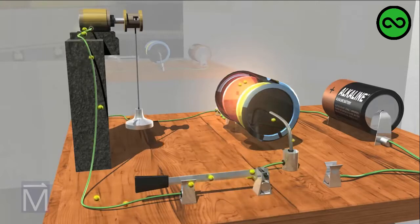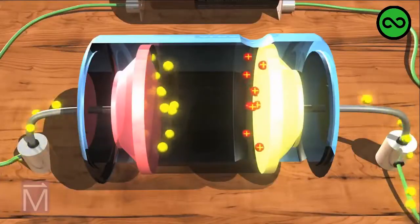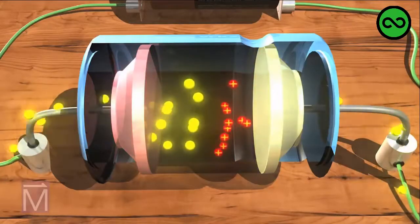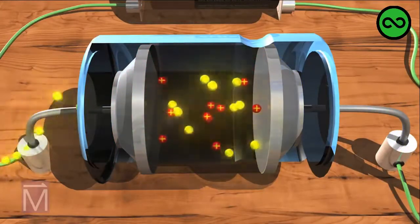This electrical current powers the pulley to lift the weight until the charge dissipates. The electrons on the capacitor's negative terminal are drawn to its positive terminal. They rush along the path that leads there, straight through the motor.